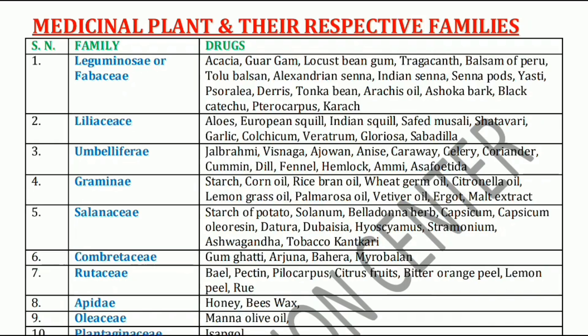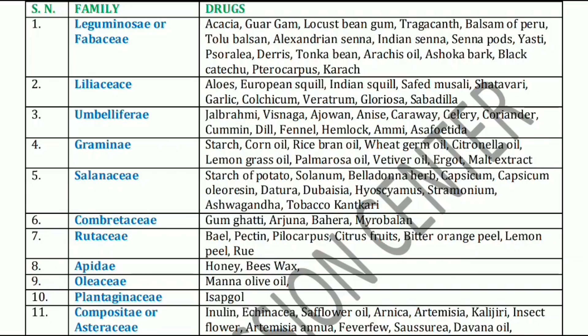The first and most important family is Leguminaceae or Fabaceae family. The plants mainly include Acacia — that's a carbohydrate — Guar gum, Locust bean gum, Tragacanth, Balsam of Peru, and Tolu balsam. Balsam of Peru and Tolu balsam are resins.